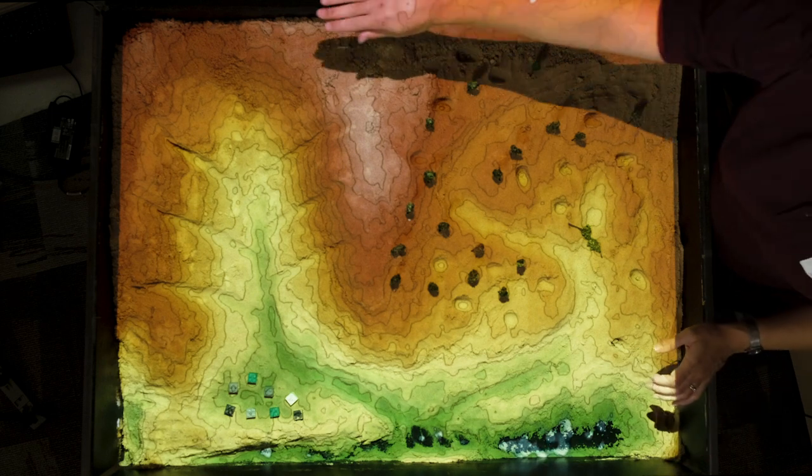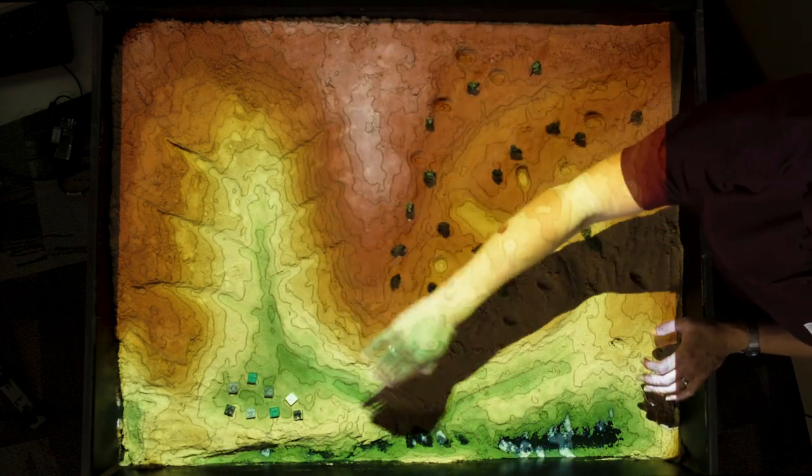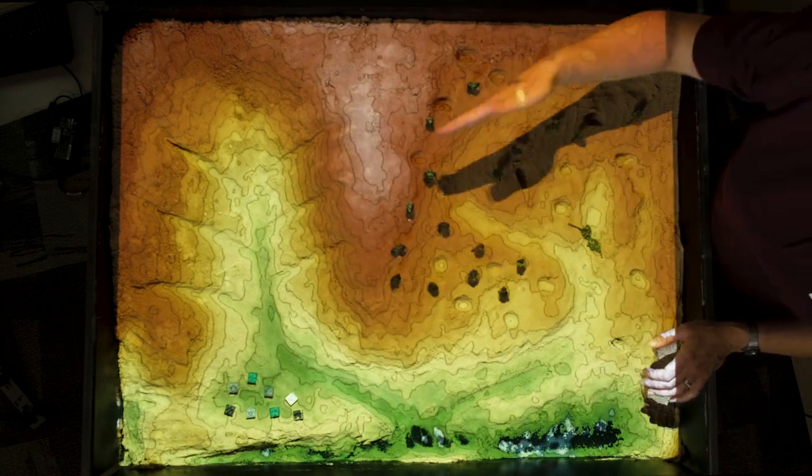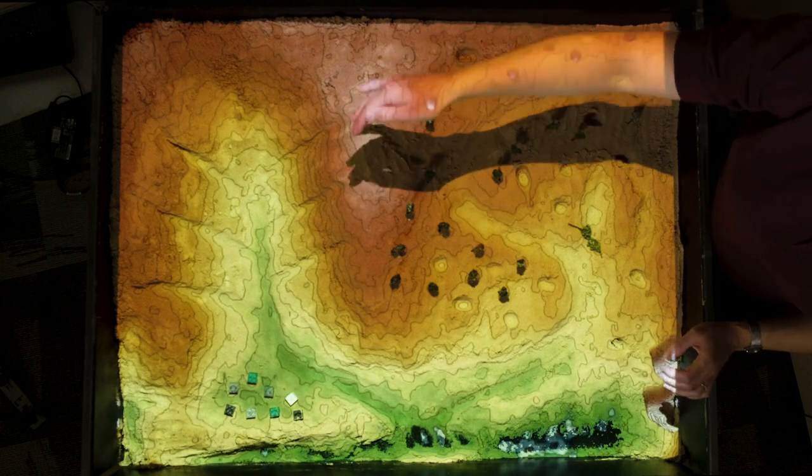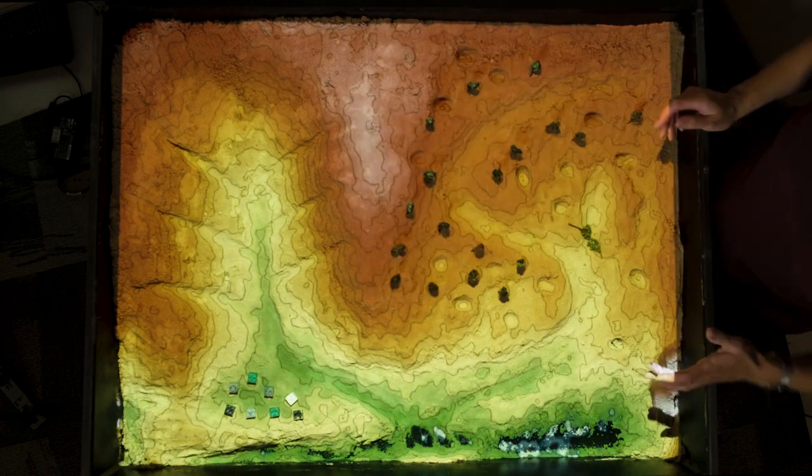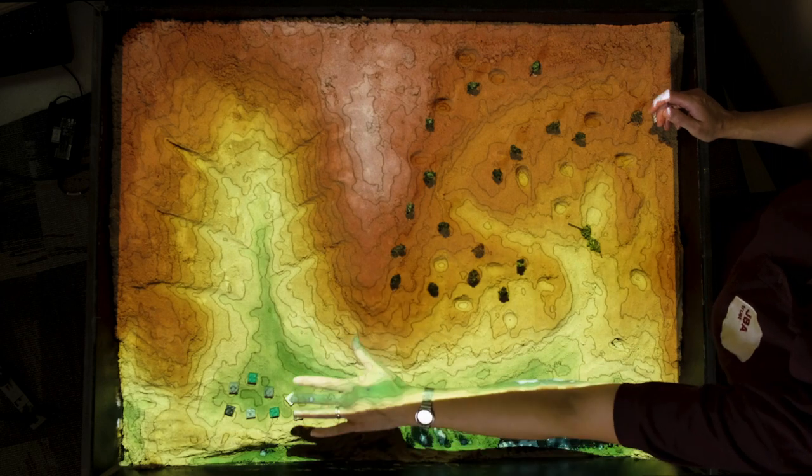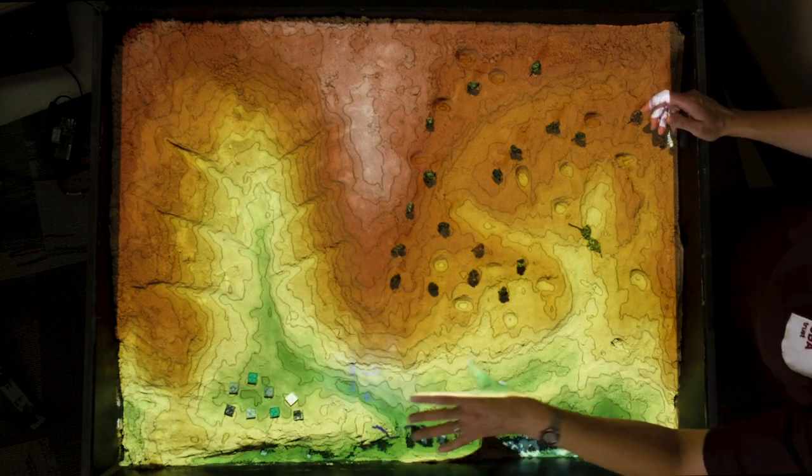As you can see this one here has got a much straighter channel. It has also got very straight steep tributaries feeding into that channel and there is a settlement that we have put at the bottom there. Those little Lego bricks are representing houses.